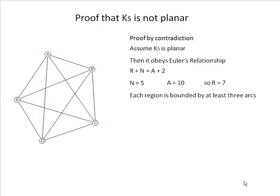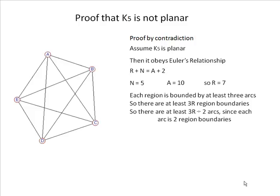Now each region is bounded by at least three arcs. So there are at least 3R region boundaries. So there are at least 3R/2 arcs, since each arc is two region boundaries. Each arc separates two regions. So 3 × 7 / 2 = 10.5, which means that there must be at least 11 arcs.